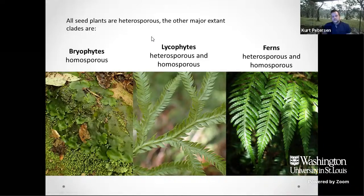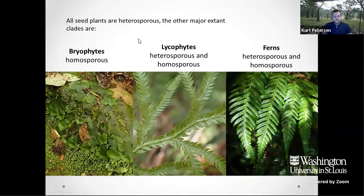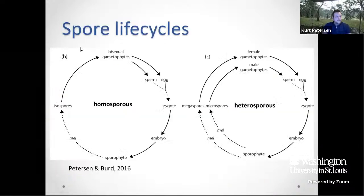To make this more visual: the bryophytes — liverworts, hornworts, and mosses — are all homosporous. The lycophytes can be heterosporous or homosporous. The ferns are vastly homosporous but there are some water ferns which are heterosporous. All seed plants are heterosporous, except they are so far down the evolutionary path that they're not very useful for understanding the origin of heterospory, because they don't represent anything that existed early in land plant evolution.